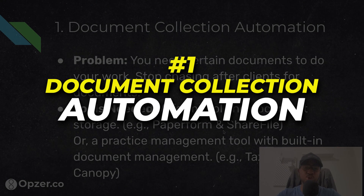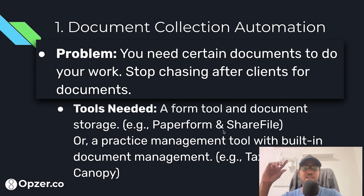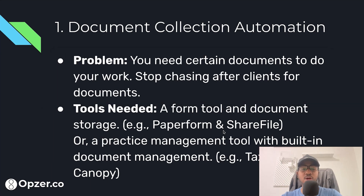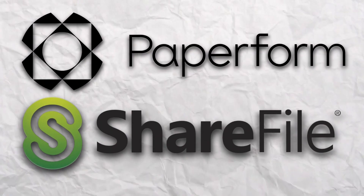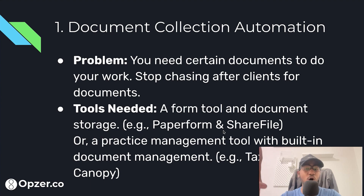Automation number one: document collection. You need certain documents to start doing your work, and it's very common — sort of like a joke — where clients always give you the documents at the last minute and you have to chase after them. Some of the tools you'll need are a form tool and a document storage tool, something like Paperform and Sharefile, or a practice management tool like TaxDome or Canopy that has document management built in.